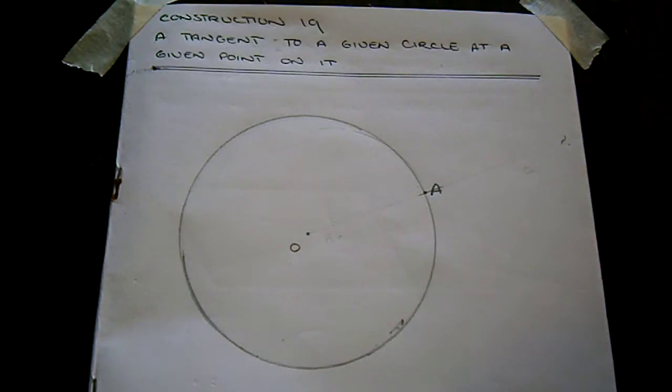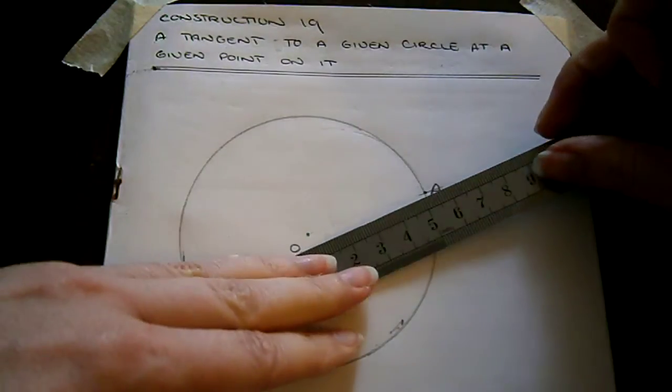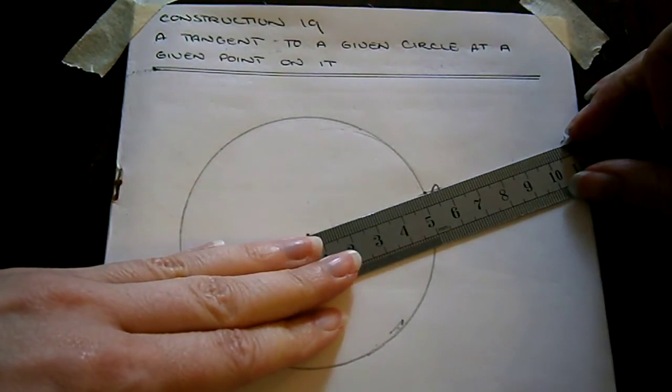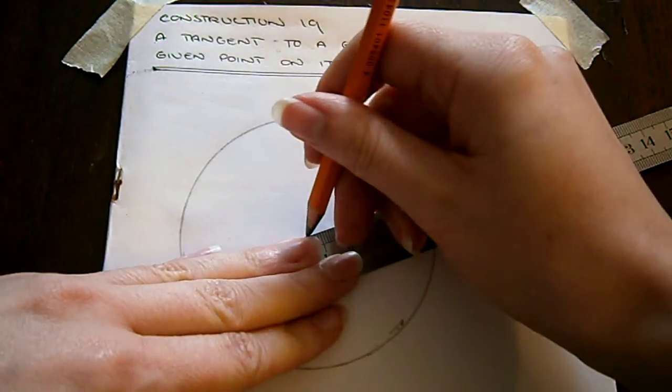We take our ruler and join O through A, extending the line out past A.